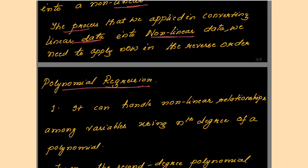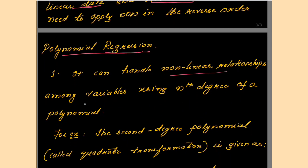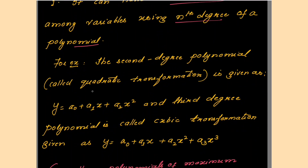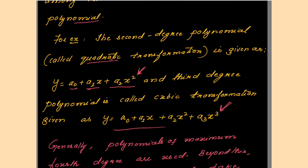Polynomial regression can handle non-linear relationships among variables using the nth degree polynomial. The second degree polynomial is called a quadratic equation, given as: a₀ + a₁x + a₂x². The highest degree here is 2. For a cubic (third degree), the expression is: a₀ + a₁x + a₂x² + a₃x³.